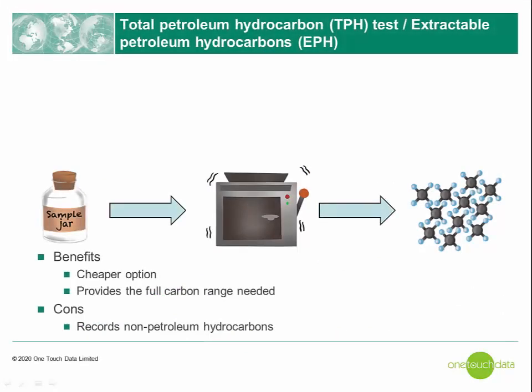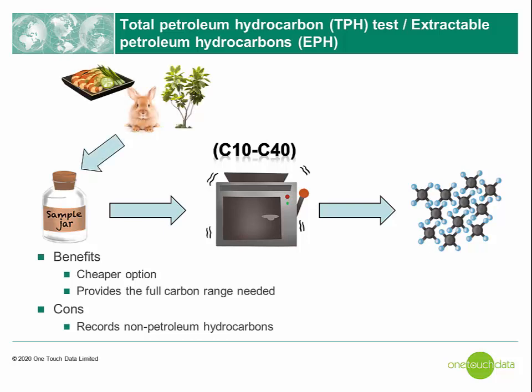Firstly, there is what some labs call a total petroleum hydrocarbon test, also commonly referred to as an extractable petroleum hydrocarbon test or EPH for short. These tests measure all the hydrocarbons extracted from the waste by the solvent, typically for organic molecules between carbons C10 and C40. As they measure all the hydrocarbons the solvent can extract, the total concentration can also include non-petroleum hydrocarbons such as humic acids from soils and fatty acids found in foods, animals, plants and some industrial processes. These tests may be preferable where you are looking for non-petroleum hydrocarbons or where the concentration is suspected to be small, as the test is also a cheaper option.